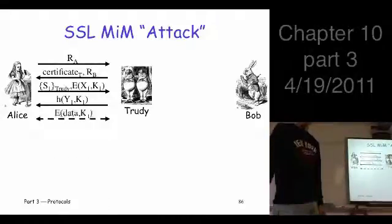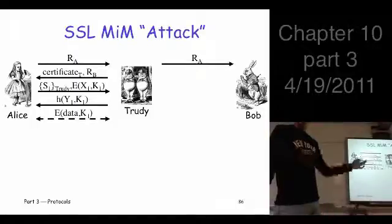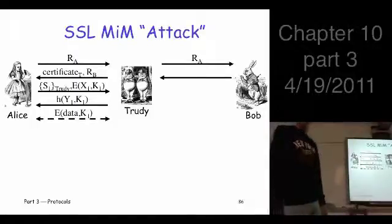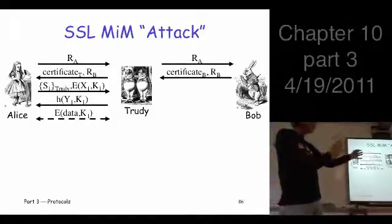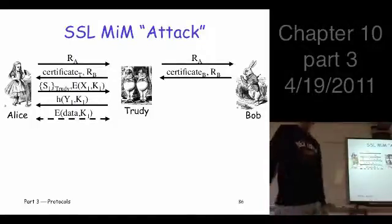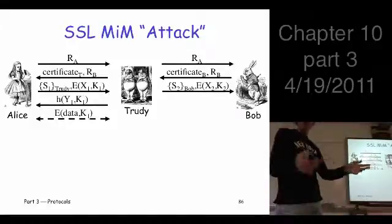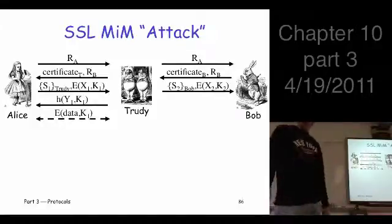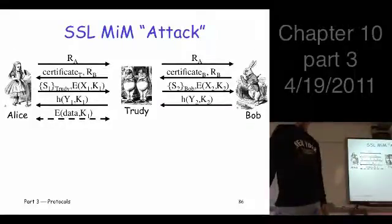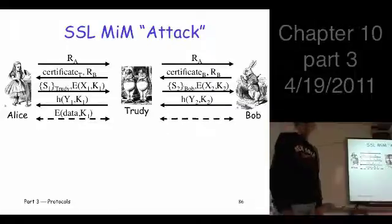They start encrypting. Meanwhile, on the other side, Trudy tries to complete the transaction with Bob, playing the client role. Bob sends his certificate. Trudy does what she's supposed to do, sends that stuff back, and so on.